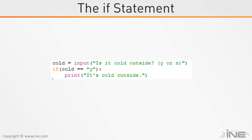This is a sample of what the code would look like if we did this in Python. Cold equals input, 'Is it cold outside? Y or N?' The user will put in either a Y or an N. So if cold is equal to Y and they say yes, it's cold outside, then we're going to print 'it's cold outside.' We don't need an else statement or anything else because that's all we're asking it to do.